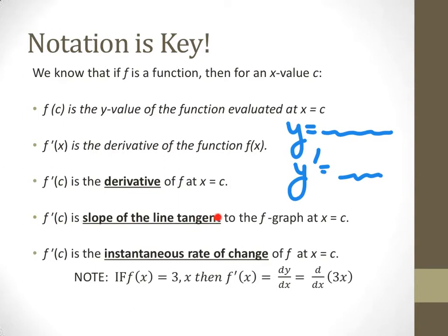We also say it's the slope of the tangent line at that x value, and that's also the instantaneous rate of change at that x value. So these three phrases - derivative, slope of the tangent line, instantaneous rate of change - they all are different ways of saying the exact same thing.